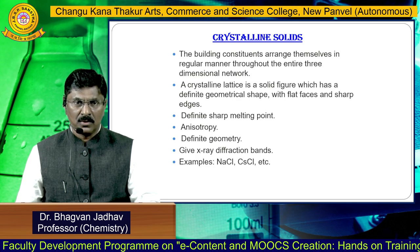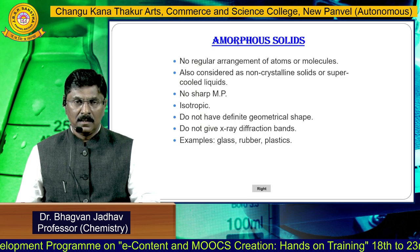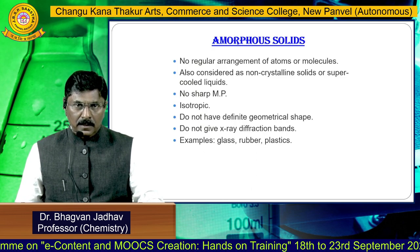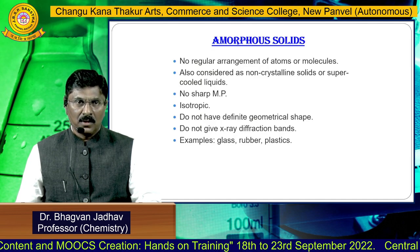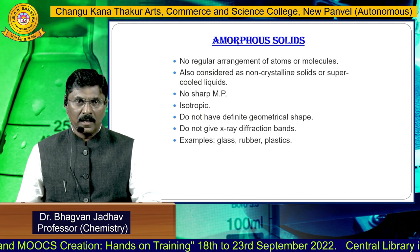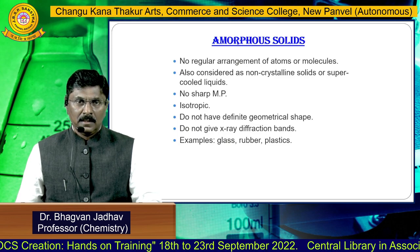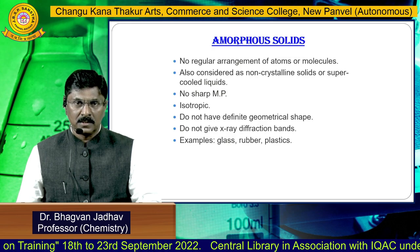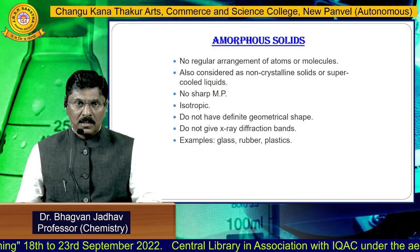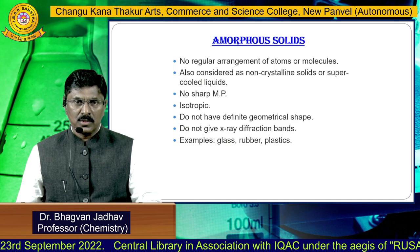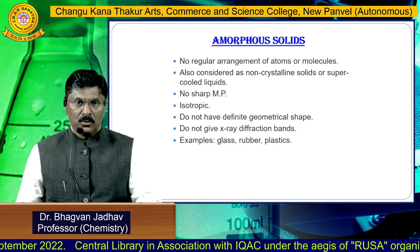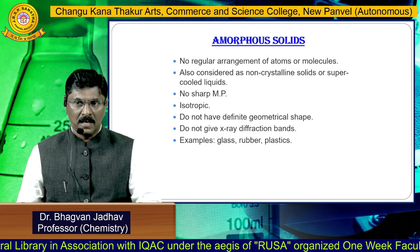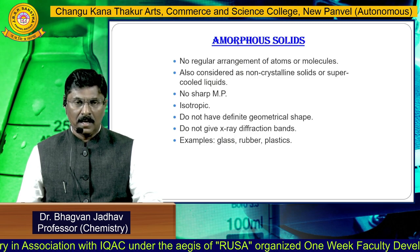Examples of crystalline solids are NaCl and CsCl. The second type of solid is the amorphous solids. In amorphous solids, there is no regular arrangement of atoms or molecules. Amorphous solids are also considered as non-crystalline solids or supercooled solids. They have no sharp melting point, show isotropy, do not have a definite geometrical shape, and do not give X-ray diffraction bands. Examples are glass, rubber, and plastic.